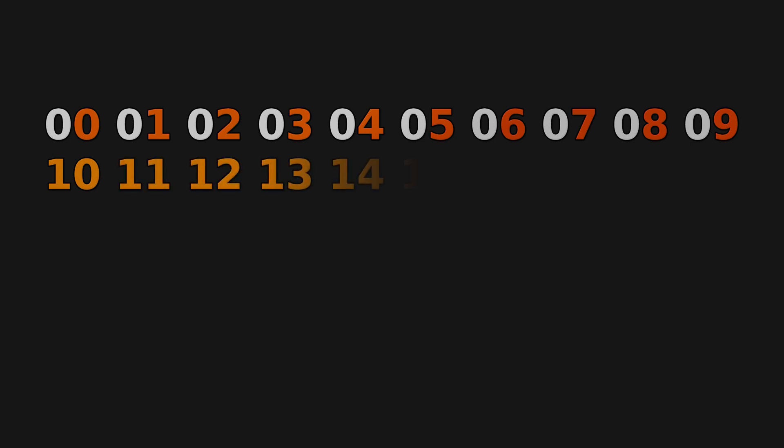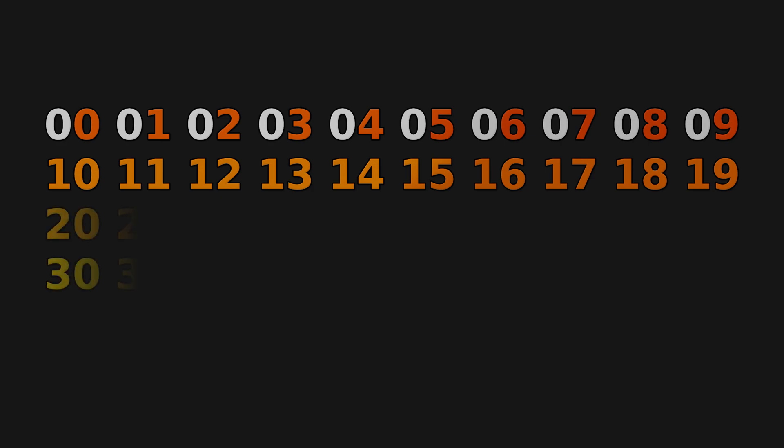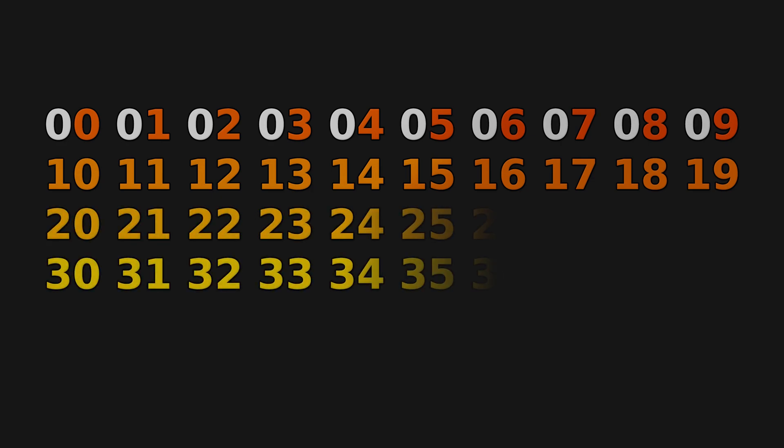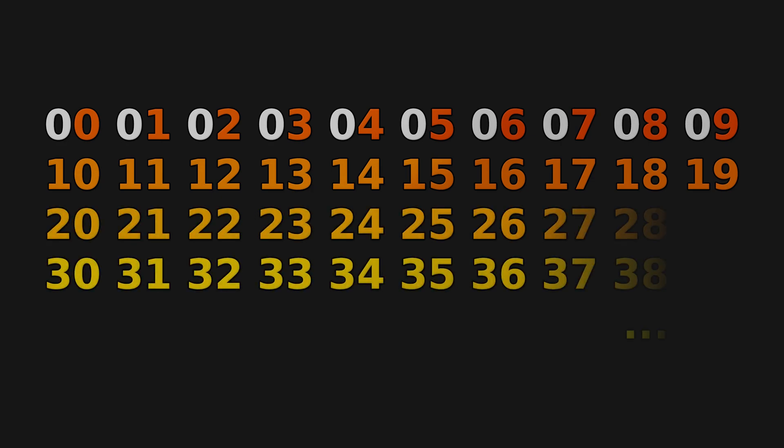We're all familiar with counting. A digit has a range of 0 to 9, it counts upward one at a time, and after reaching 9, it becomes 10. The counting begins again, going up to 19, then it becomes 20, and so on until 99.